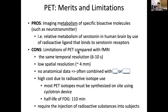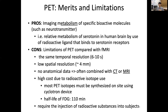On the other hand, the limitation of PET compared with another functional imaging modality such as functional MRI — which we will discuss next time — is that it has a low spatial resolution of several millimeters. PET also doesn't provide anatomical data, so we often combine PET with CT or MRI for overlaying anatomical information as well.